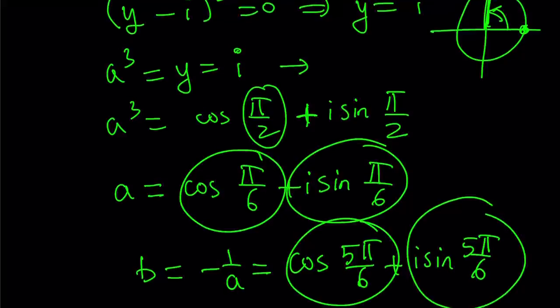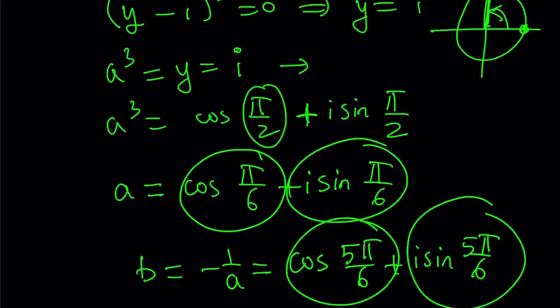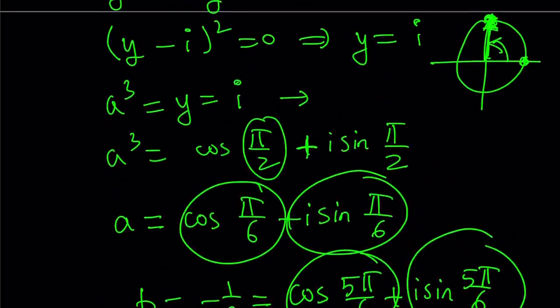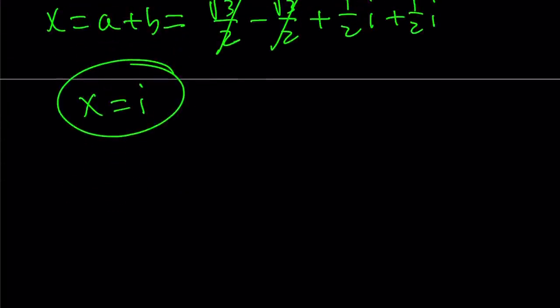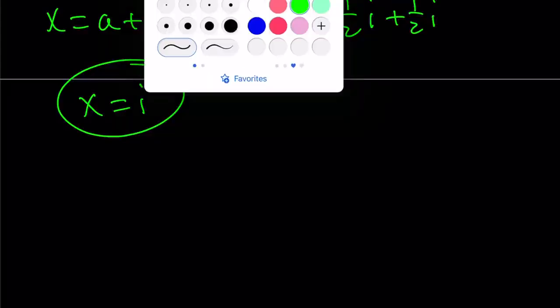So x is equal to i, and we're going to find the other solutions from here. But let me go ahead and proceed with the second method, because I'm going to show you the rest in there.